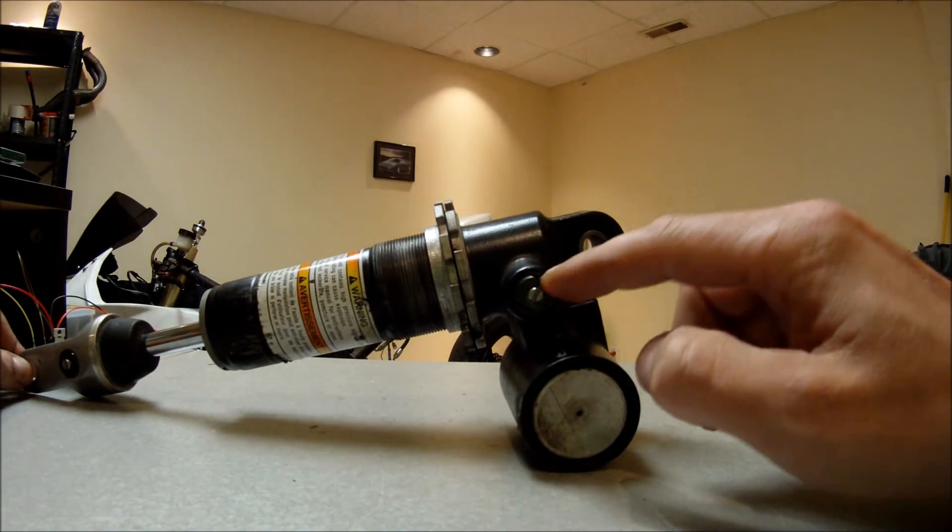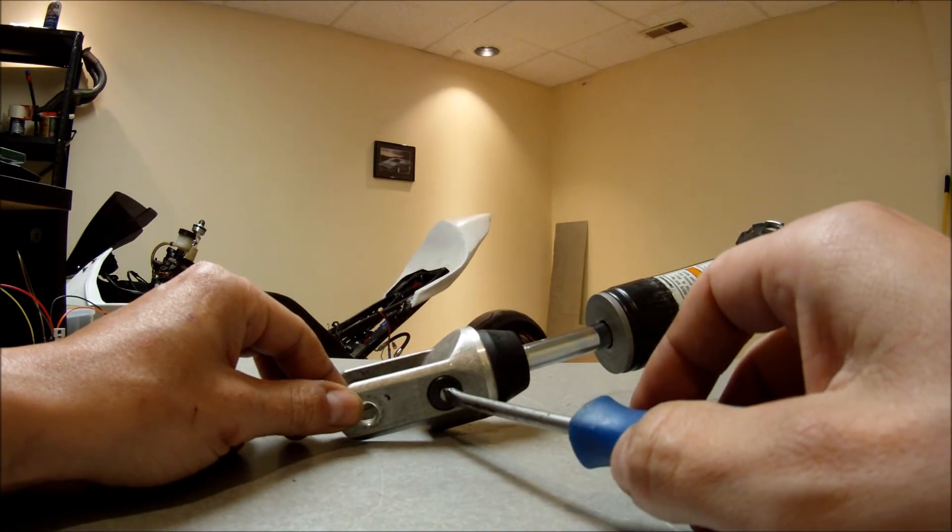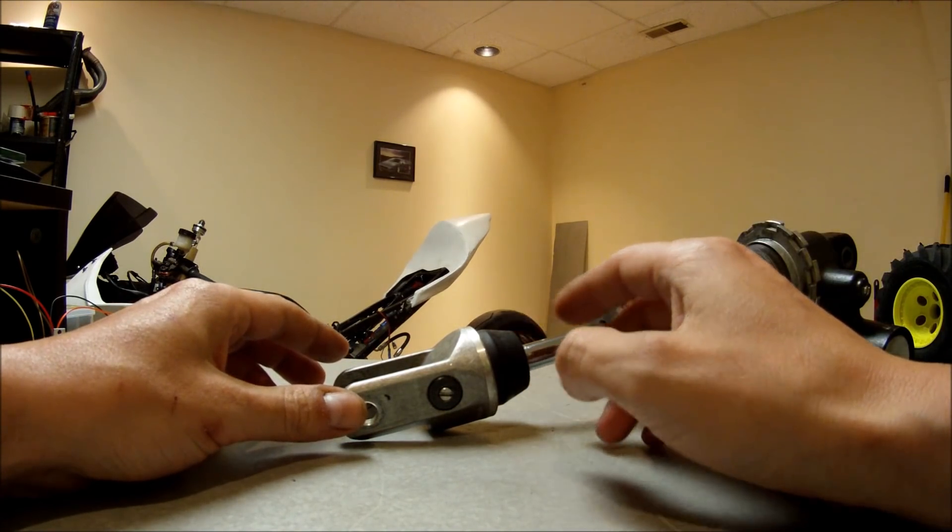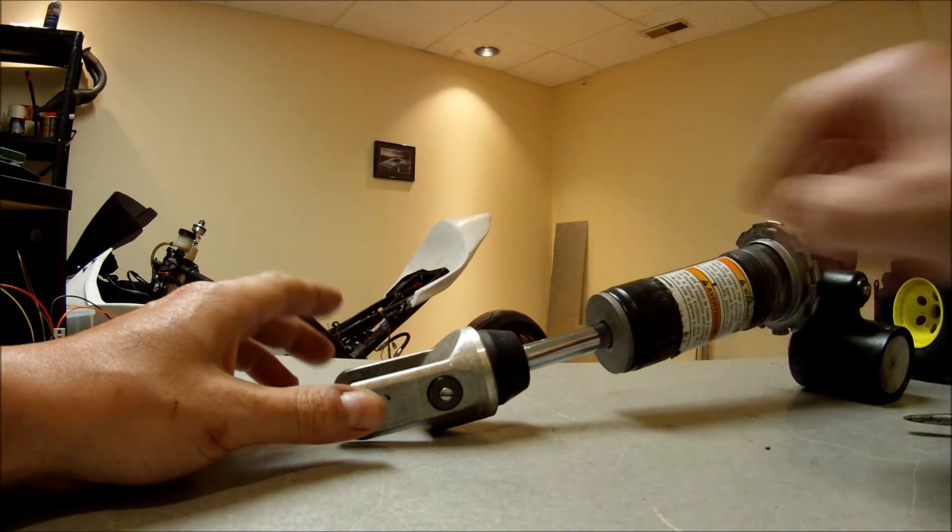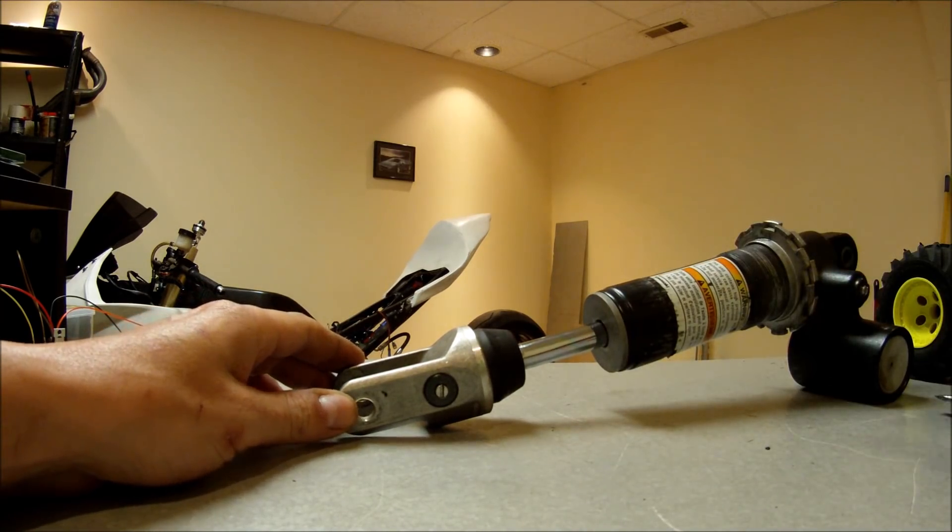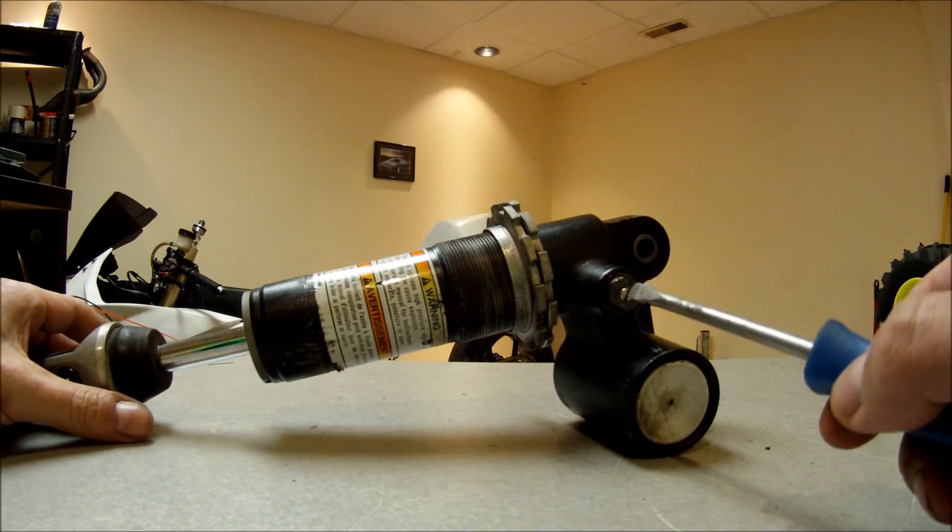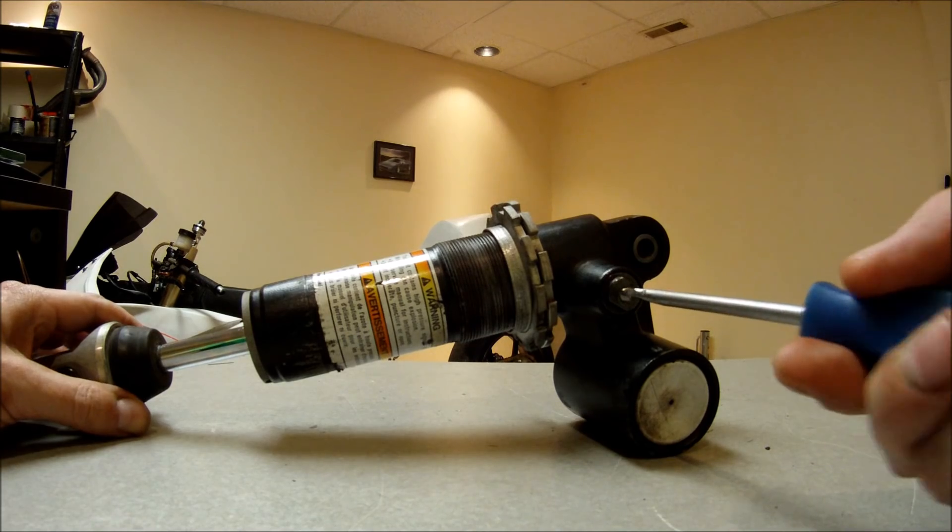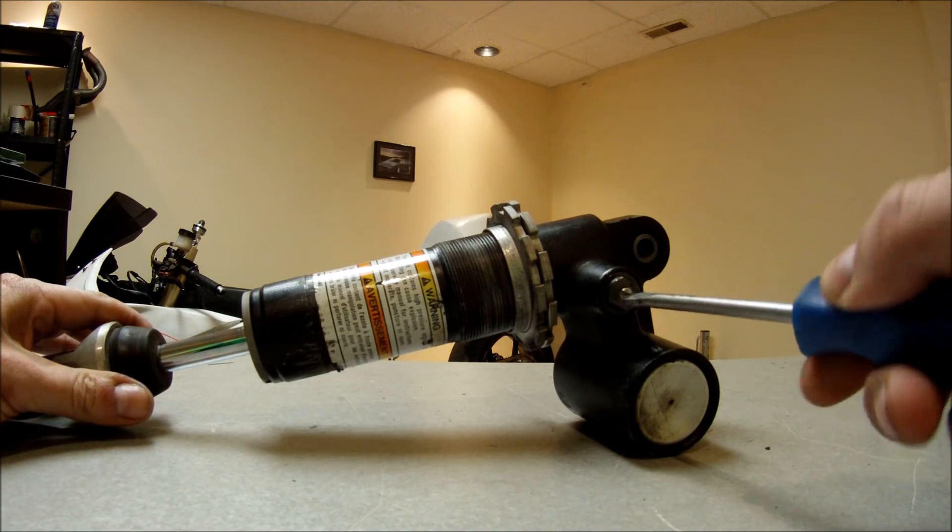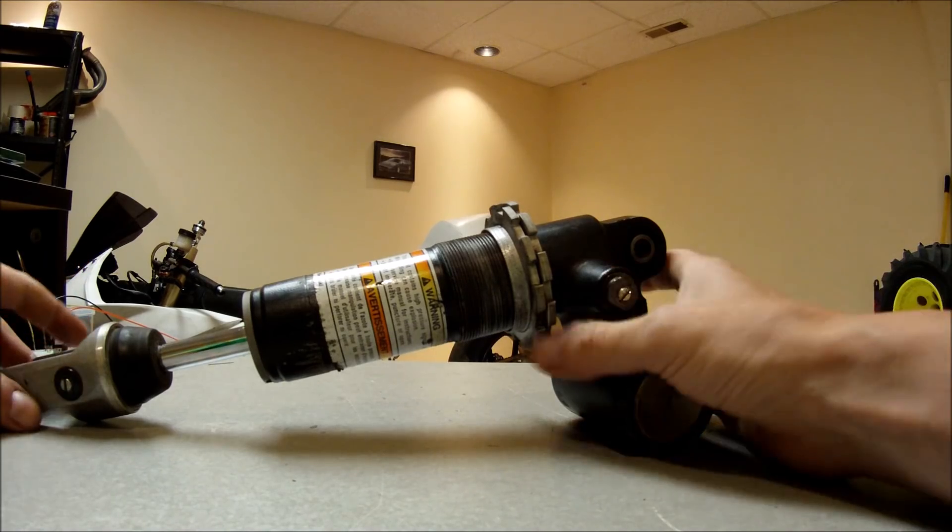If you turn it clockwise, the rebound will become firmer. If you turn it counterclockwise, the rebound will become softer. Same thing on the compression: if you turn it clockwise, the compression will become firmer. If you turn it counterclockwise, the compression will become softer.